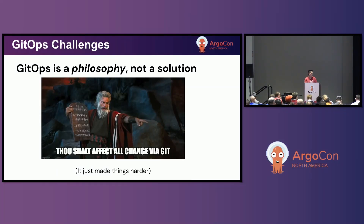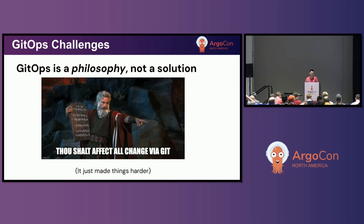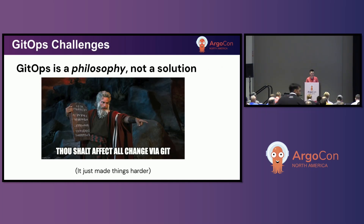If you think about what GitOps is, it's really more of a philosophy and not really a solution. Basically, GitOps is just adding additional rules and constraints on how you should be deploying changes to your environments, but it really doesn't provide any guidance on the practices or processes to go about achieving that. So at the end of the day, GitOps just made things harder for everyone, because a lot of the stuff that we were previously doing before GitOps in our CI pipeline no longer worked after GitOps.